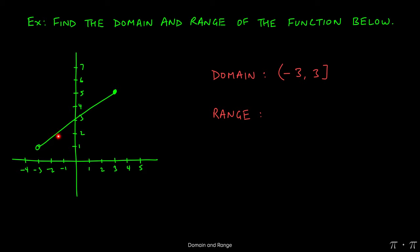The range starts at 1 but we don't include 1 because of the open circle. Then we check: does the function hit 2, 3, 4, 5? Yes — but the function stops there and doesn't go higher. So the range will be from 1 to 5, excluding 1 and including 5, because we do actually achieve the y value of 5.